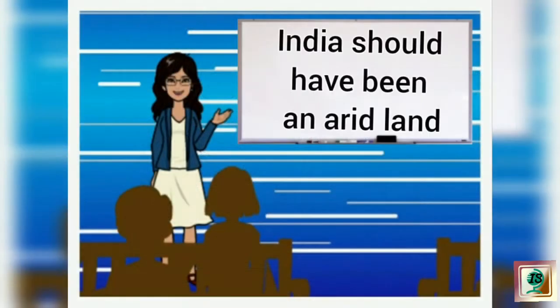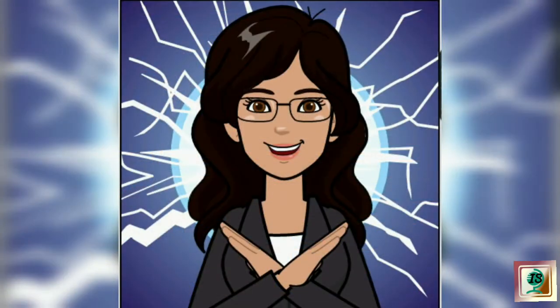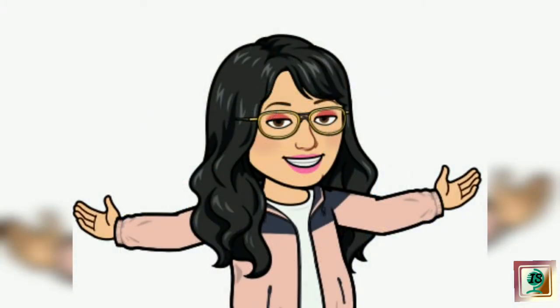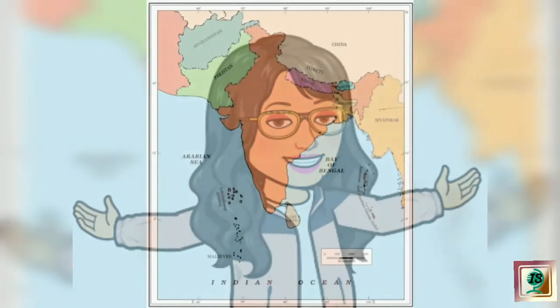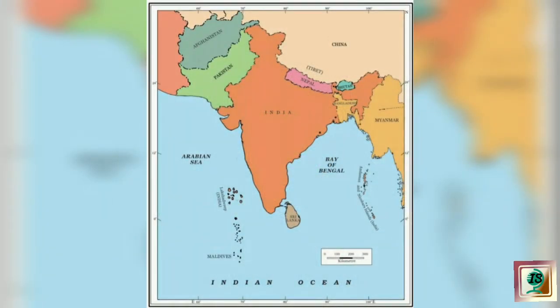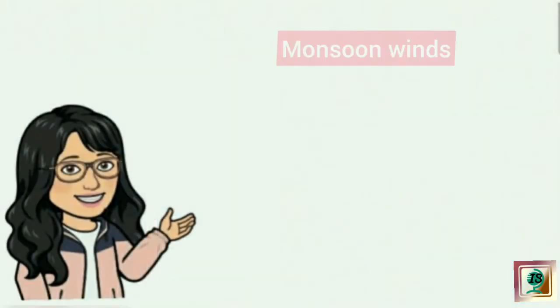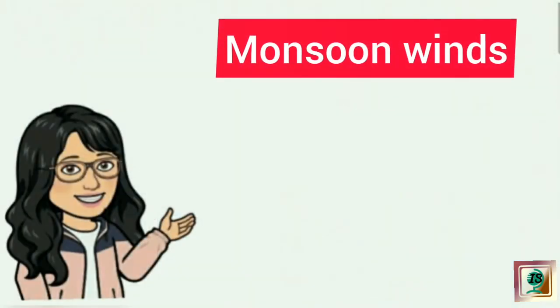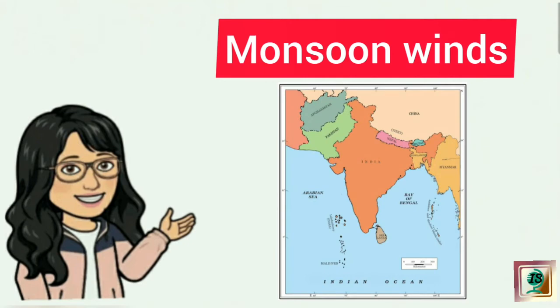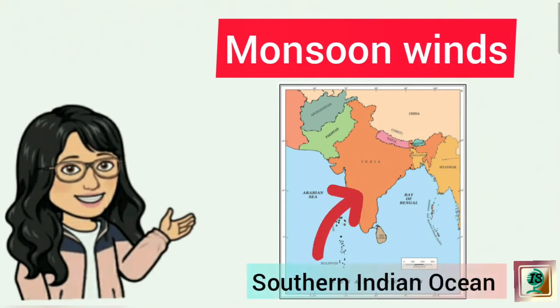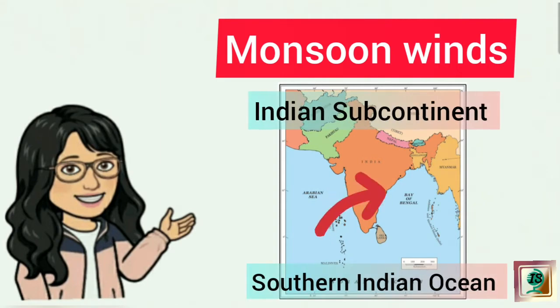Dear students, in the last video you studied that India should have been an arid land, but it is not so, due to the unique pressure and wind conditions over the Indian subcontinent. We all know, a good amount of rainfall takes place in India in monsoon season. It is because of the monsoon winds that blow over the Indian subcontinent in a south-westerly direction from the southern Indian Ocean to the Indian subcontinent.